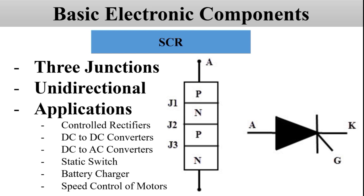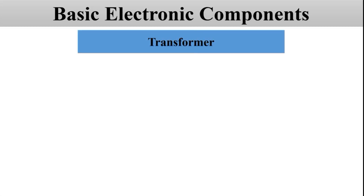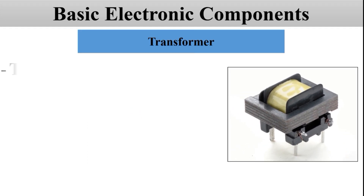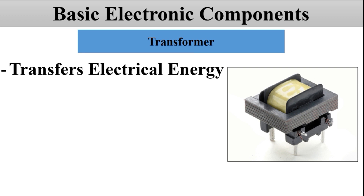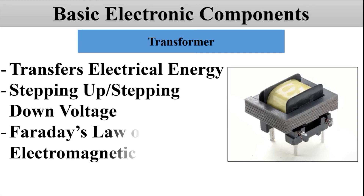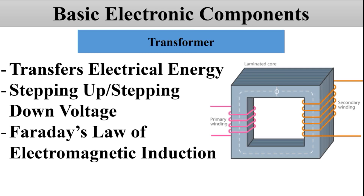Now let's move to another device — the transformer. You can see the diagram on the screen; this is how a typical transformer looks like. A transformer is a device that transfers electric energy from one alternating current circuit to one or more circuits, either stepping up or stepping down the voltage. The transformer works on the principle of Faraday's law of electromagnetic induction and mutual induction. In the diagram you can see there are usually two coils — a primary coil and a secondary coil — wound around the transformer core, which is known as the laminated core.